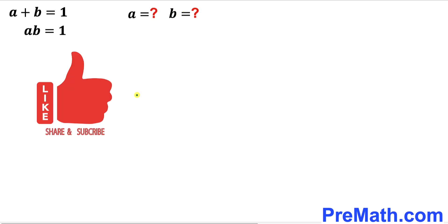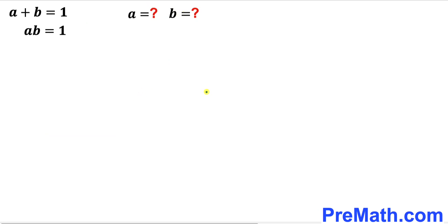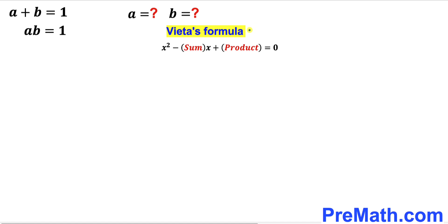Please don't forget to give a thumbs up and subscribe. Let's get started. Since we are going to solve this system of two equations, let's recall the relevant formula: x squared minus the sum of the roots times x plus the product of the roots equals to 0.